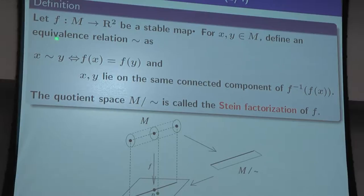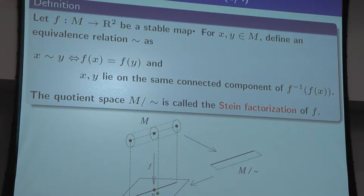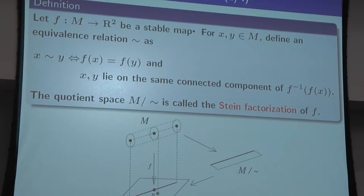Stein factorization: suppose S is a stable map; for two points X and Y in M, define an equivalence relation by: they are on the same connected component of the same fiber. The quotient space is called the Stein factorization of S. For a definite fold, the preimage of P is one point, so we have one point. The preimage of the green point is a simple closed curve — one connected component — so it also maps to one point, giving a polyhedral shape with a cap.